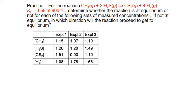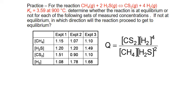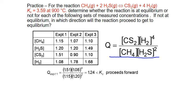First, we write the equilibrium expression, and since we're substituting in any concentration, we label this as our reaction quotient. For experiment one, we get a Q value of 1.24, which is less than our K_C value of 3.59. So Q is less than K_C, meaning our reaction will shift to the right — we'll increase our products and decrease our reactants to reach equilibrium.